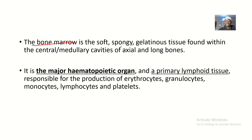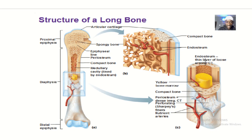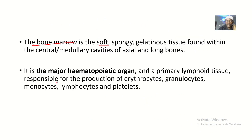The bone marrow is the soft, spongy, and gelatinous tissue found within the central or the medullary cavities of the axial long bones. It's in the central cavity — outside the bone marrow we have a spongy bone, and outside the spongy bone we have the compact bone. So the central area is where we find the bone marrow. It is the major hematopoietic organ and a primary lymphoid tissue responsible for the production of erythrocytes, granulocytes, monocytes, lymphocytes, and platelets.